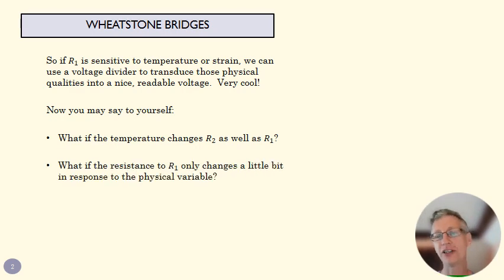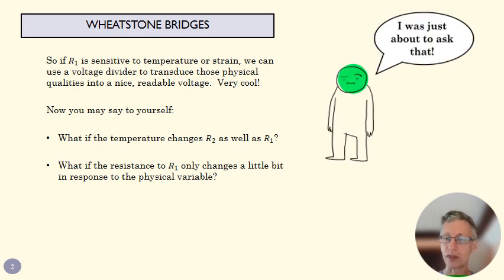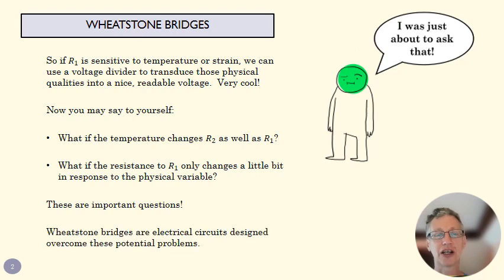Or what if R1 changes its value by a very small amount, as is often the case? You've probably been wondering about that - thinking about those questions even as we were talking about voltage dividers. These questions matter because they're both very realistic situations. Both of these things happen in real circuits.